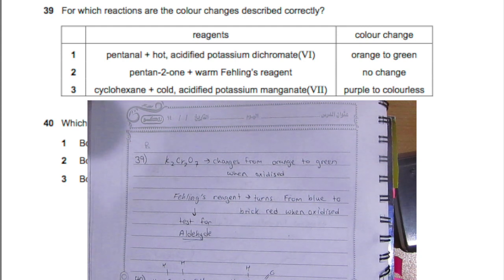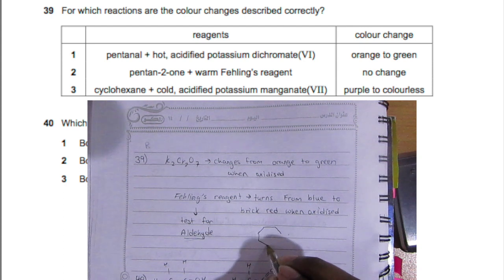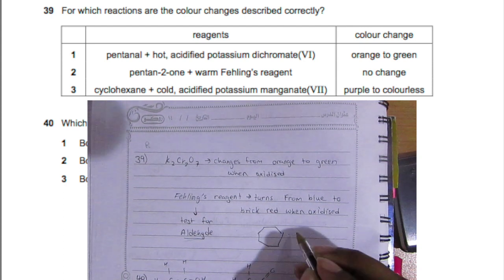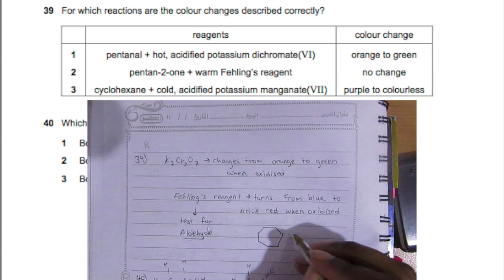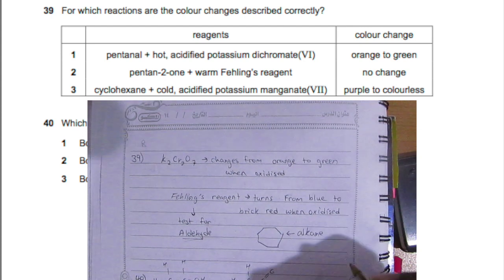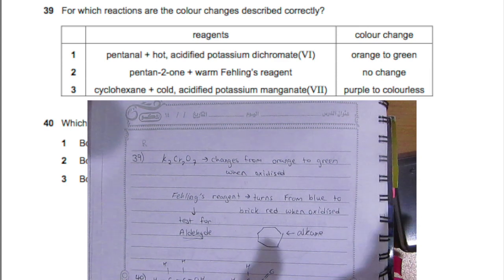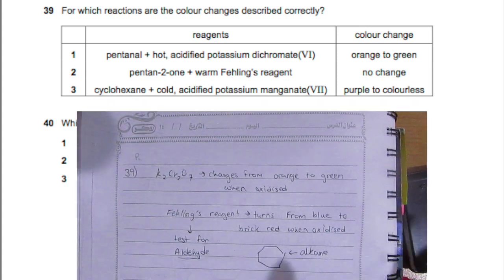Pentane-2-one plus warm Fehling's reagent, no change—that's correct because pentane-2-one is a ketone, not an aldehyde, and Fehling's reagent tests for aldehydes. Cyclohexane plus cold acidified potassium manganate—nothing's going to happen because cyclohexane is an alkane, so there are no bonds to be broken. Options one and two are correct, so B is your answer.